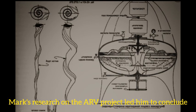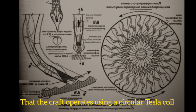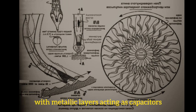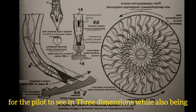Mark's research on the ARV project led him to conclude that the craft operates using a circular Tesla coil, with metallic layers acting as capacitors, liquid mercury for thrust, and a synthetic vision system for the pilot to see in three dimensions.